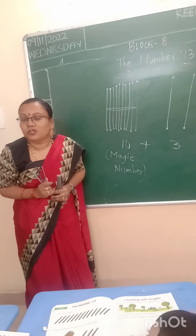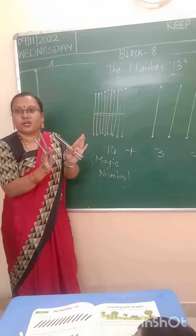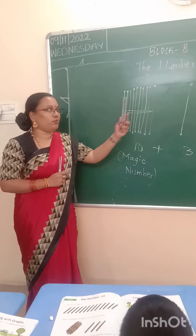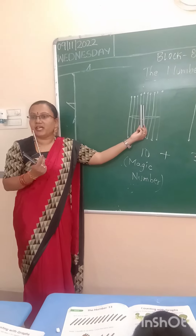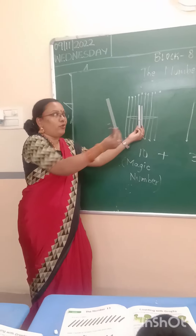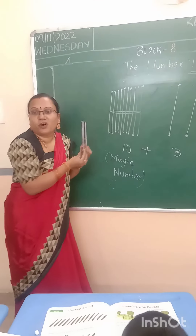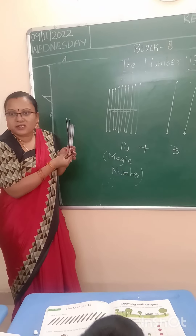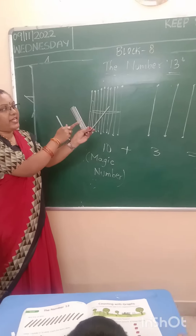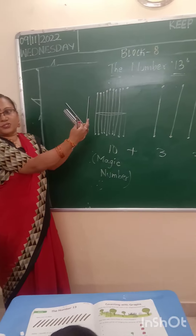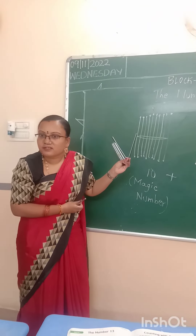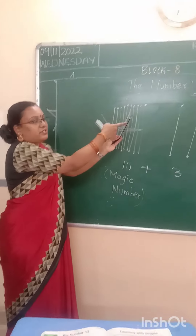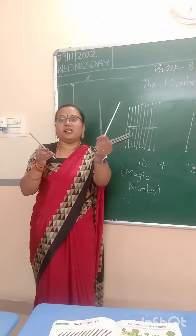Now, suppose if we want only 11 — now 13 is finished, stop it. Previously we have done 11. For 11, what do we have to do? First, 10 bundle. After 10, how many more pencils? Only one. For 11, if I want 12 — how many pencils do I have to take? 1, 2. Yes. 10, 11, 12. This is 12. If I want 13? 10, 11, 12, 13.